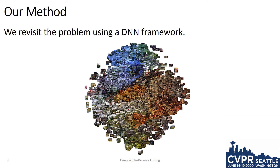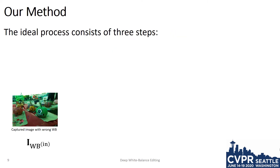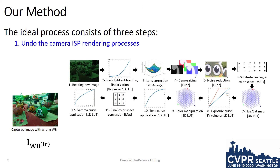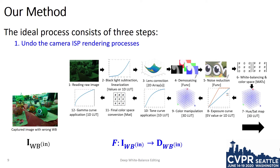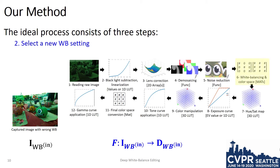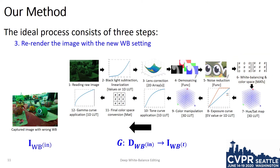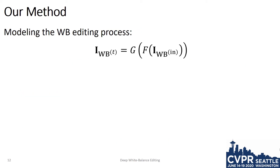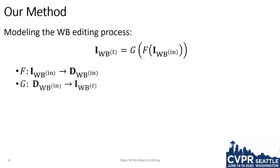This year, we have revisited the problem using a deep neural network framework. To understand our new framework, we begin by examining an ideal procedure to change the white balance in a camera rendered image. Ideally, we would first like to undo the camera's processing to get back to the un-white-balanced raw image — we refer to this un-processing or de-rendering with the function F. Next, after we have de-rendered the image, we can select a new white balance setting. Finally, we re-render the image with the new white balance setting, referred to as the function G. We write this entire process as: F de-renders the image, and G reprocesses it with the new white balance setting.